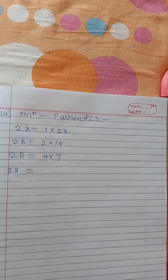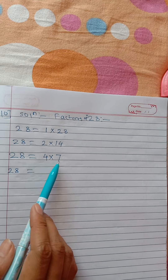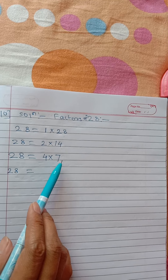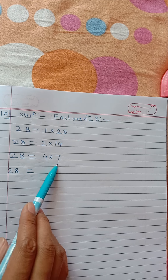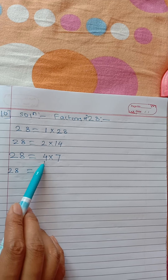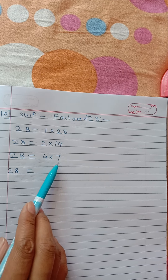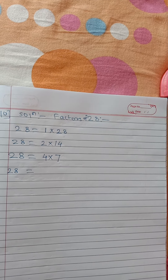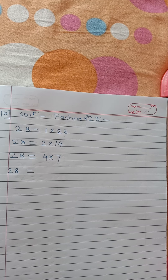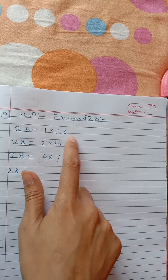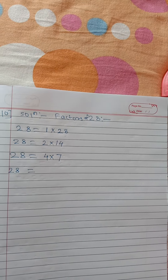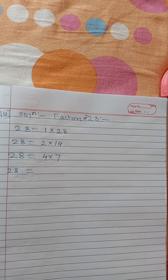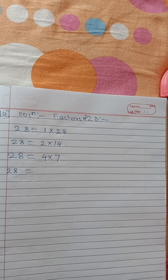After 6, the next number is 7. But 7 is already present in our pairs — 4 multiplied by 7. Since 7 is already listed, the factors after this will simply repeat. So we stop finding factors here.